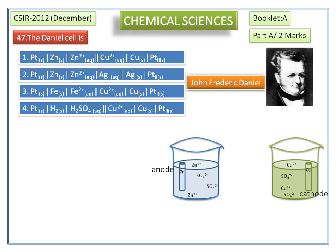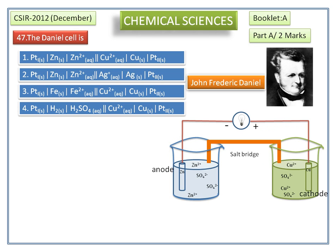These two half cells are connected by an external electrical circuit and also connected by a salt bridge. The salt bridge is an intermediate compartment filled with a saturated solution of KCl or KNO₃ and fitted with a porous barrier at each end. It maintains electrical neutrality within the internal circuit.